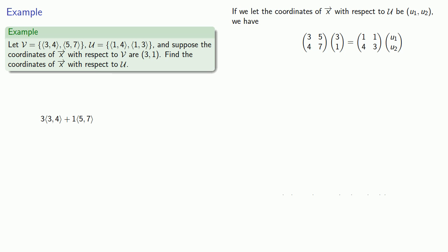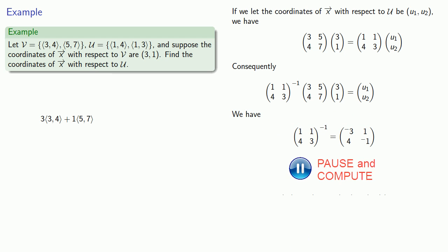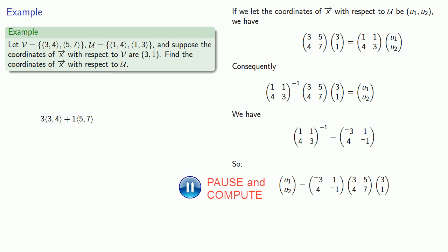So what I can do to solve for this vector (u1, u2), I can multiply on the left by the inverse of (1, 1; 4, 3). And we can find that in any number of ways. We find the inverse and we multiply on the left by it and get (u1, u2) as a product of 3 matrices, which ends up being (-23, 37).